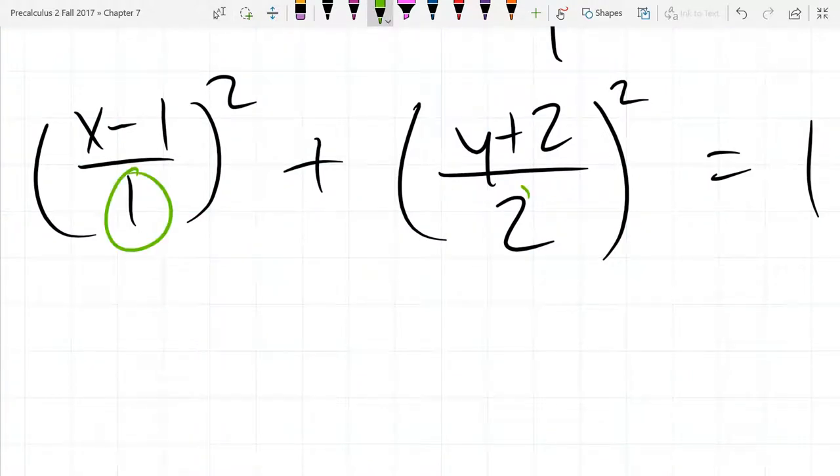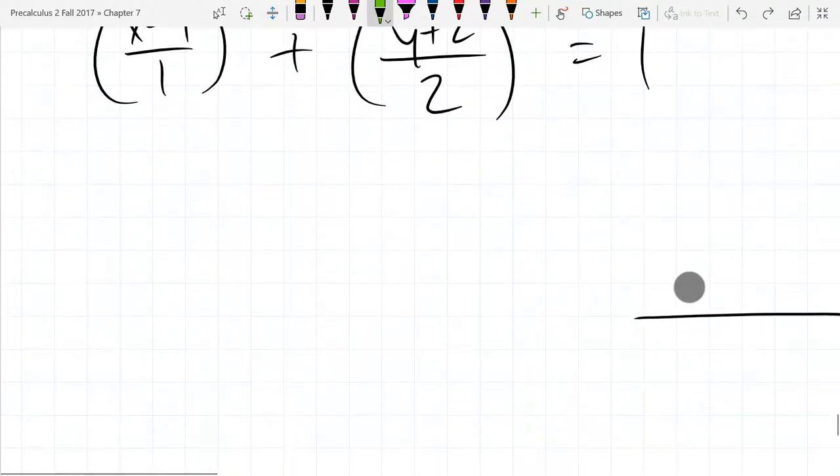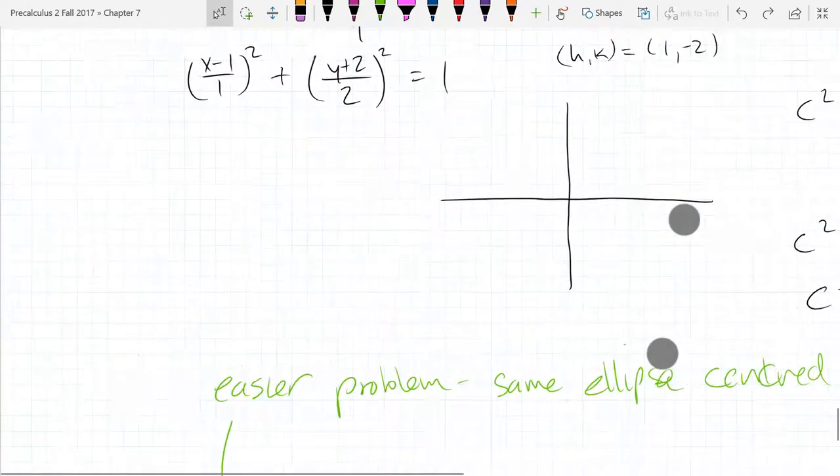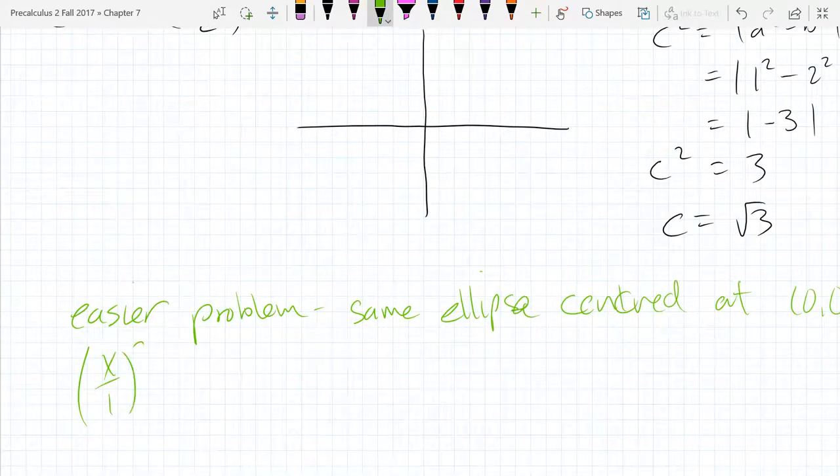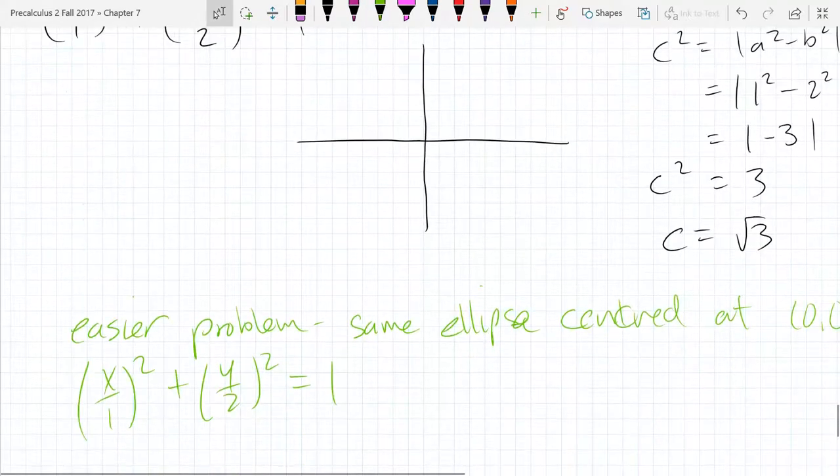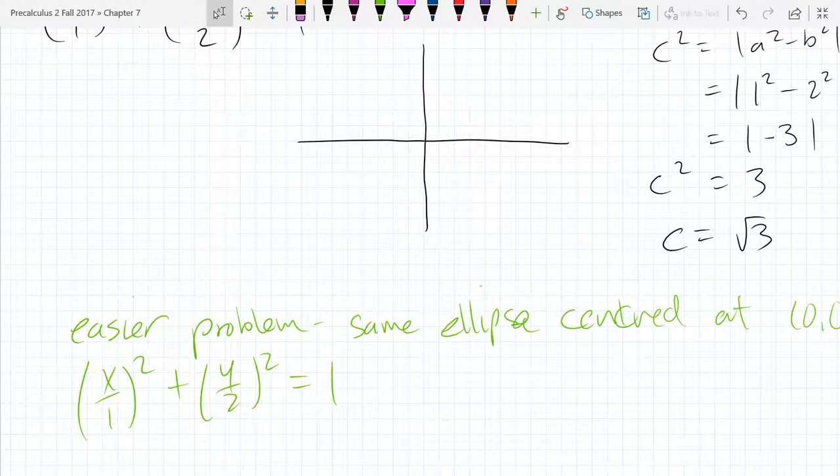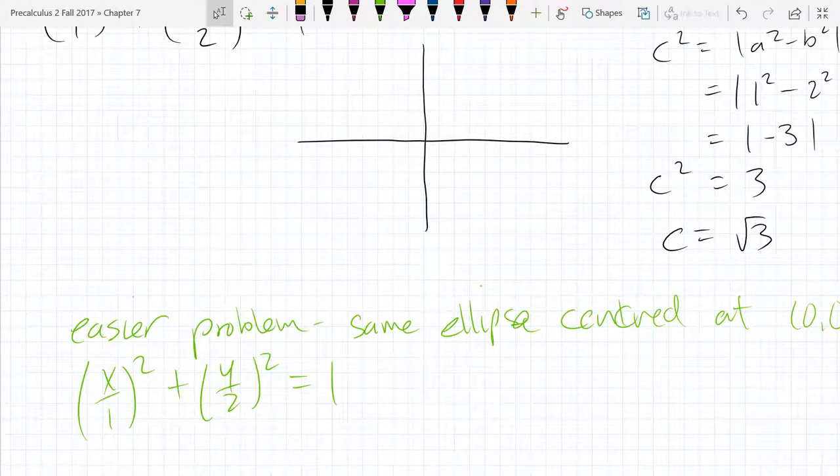What changes in our equation if I want to center this at 0, 0? The a and the b, that's basically the height and the width. That's the stretching. So we don't want to change that. Our h and our k is what we want to change. So it's basically everything we're adding, subtracting. So we're going to put, basically eliminate both of those or just not even write them. So we're going to have x over 1 squared plus y over 2 squared equals 1. So this is a different ellipse, but it has the same exact shape. We're just moving it to the origin.